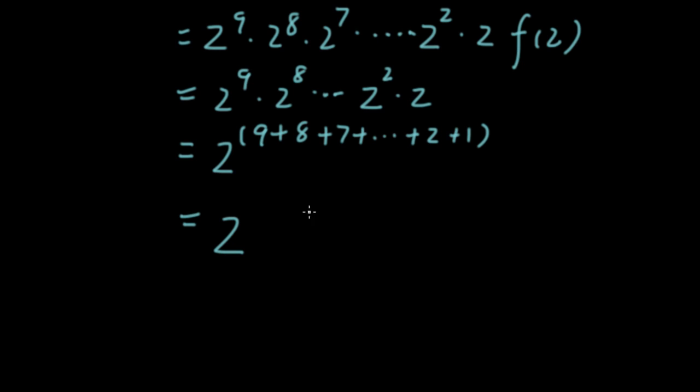Now we know that this exponent is equal to 9 times (9 plus 1) divided by 2. And this is 9 times 10 divided by 2. And this would cancel out, leaving 45. So this is ultimately equal to 2^45.